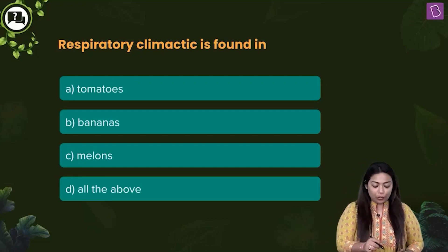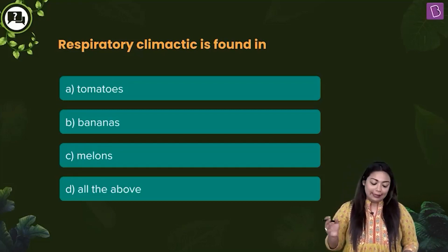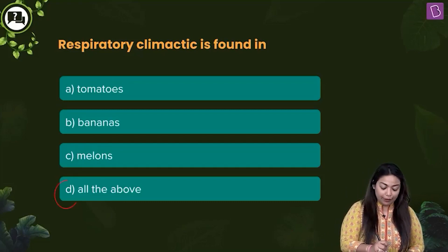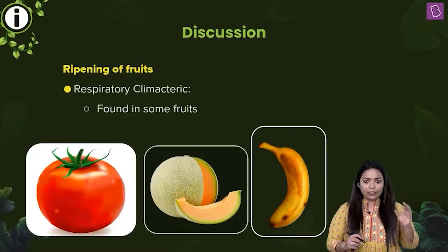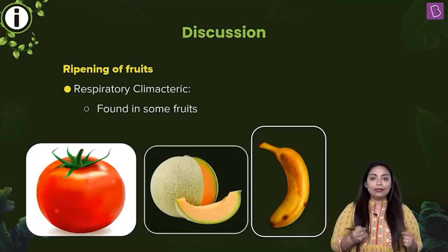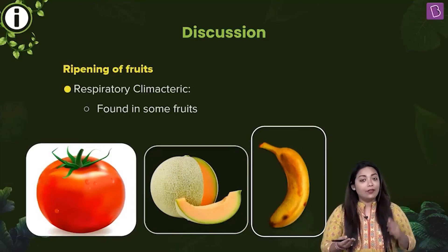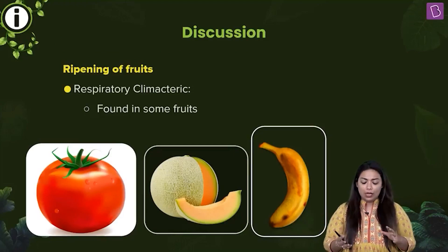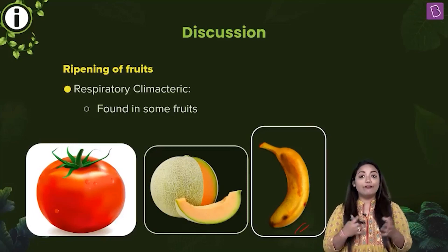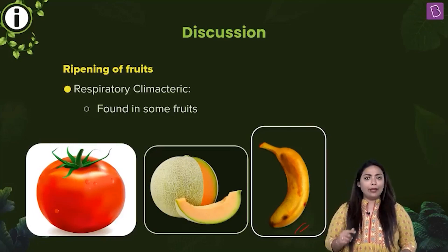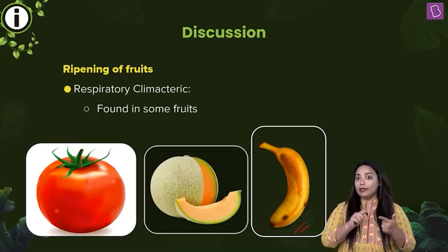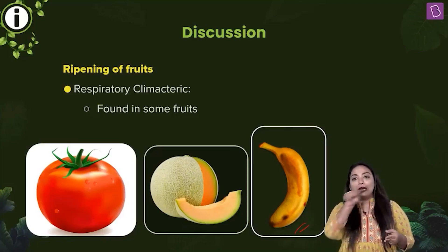Respiratory climactic is found in which fruits? Tomatoes, bananas, melons — all of the above will show this particular effect thanks to Ethylene. During fruit ripening, the rate of respiration is really high. You will also see a change in color, a lot of sugar will be released, and the fruit will taste very sweet. So during respiratory climactic: rate of respiration is high, the fruit tastes very sweet, and there is a change in color.